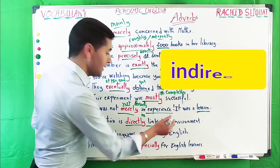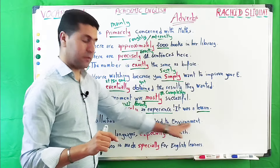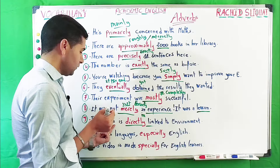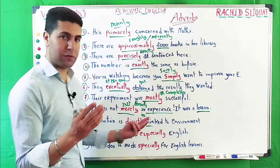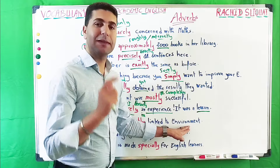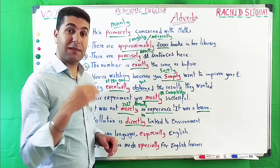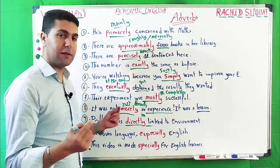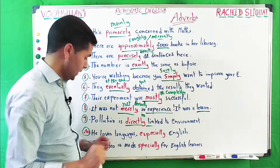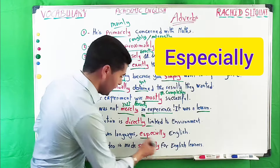'Pollution is directly linked to the environment.' Sometimes we can say 'indirectly' — directly linked or indirectly linked. So there is a direct link between pollution and the environment: pollution affects the environment negatively. Another example: 'Success is directly linked to hard work.'